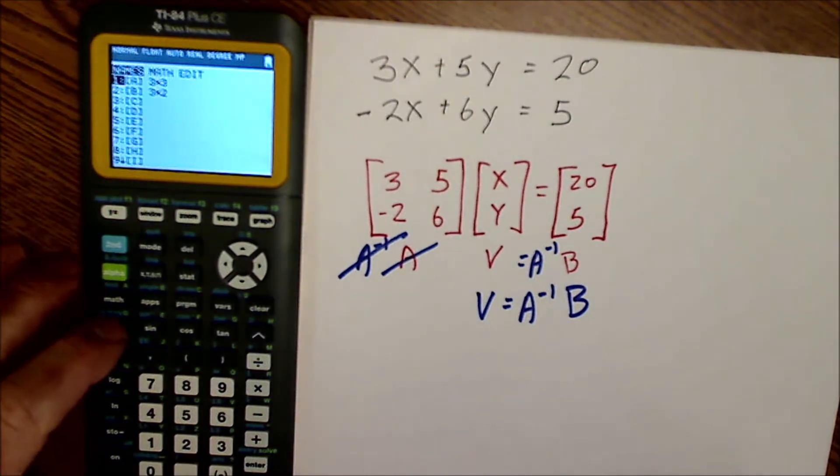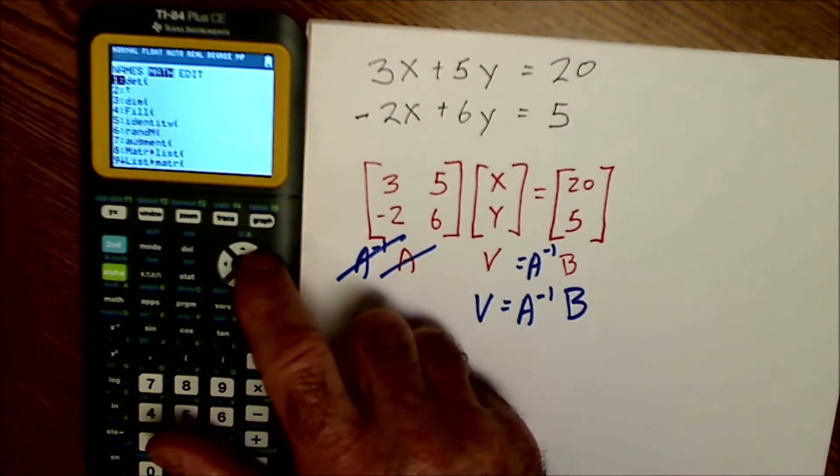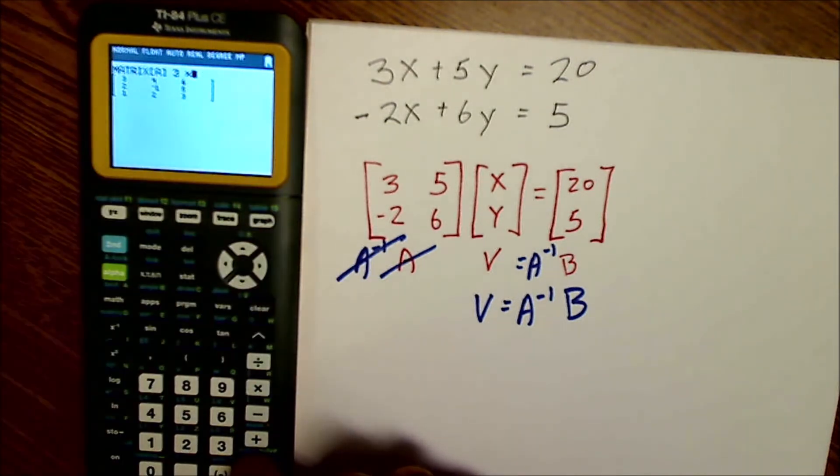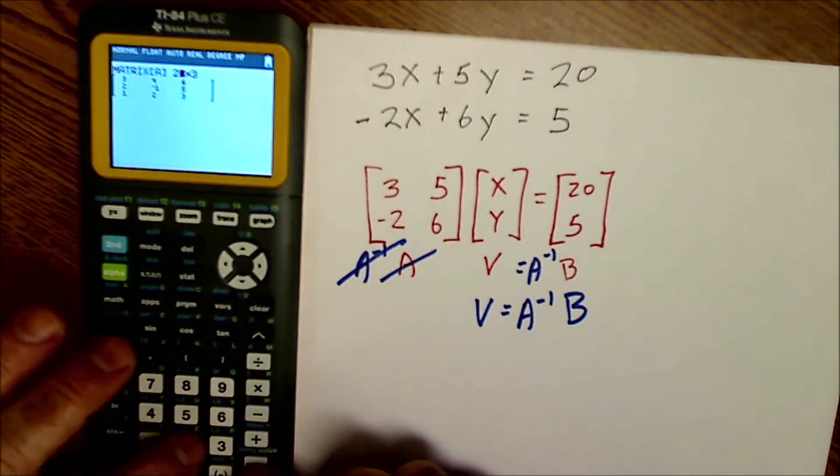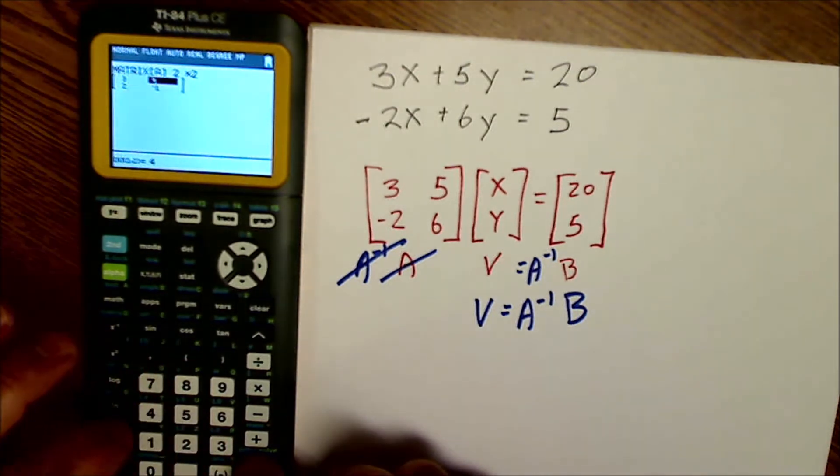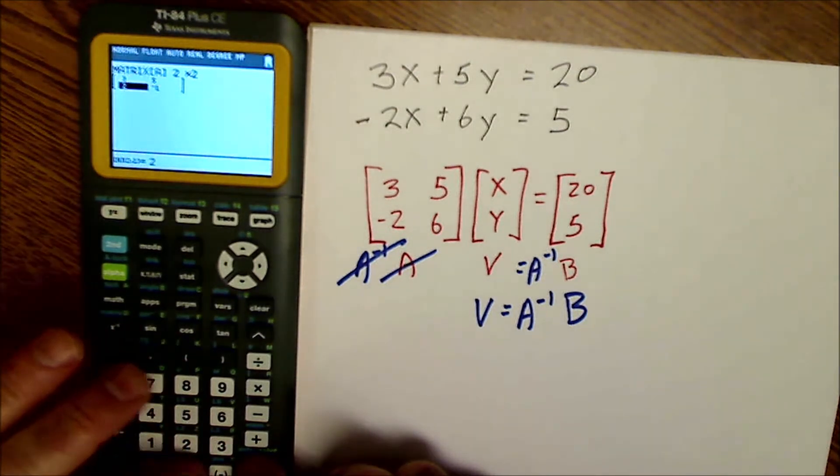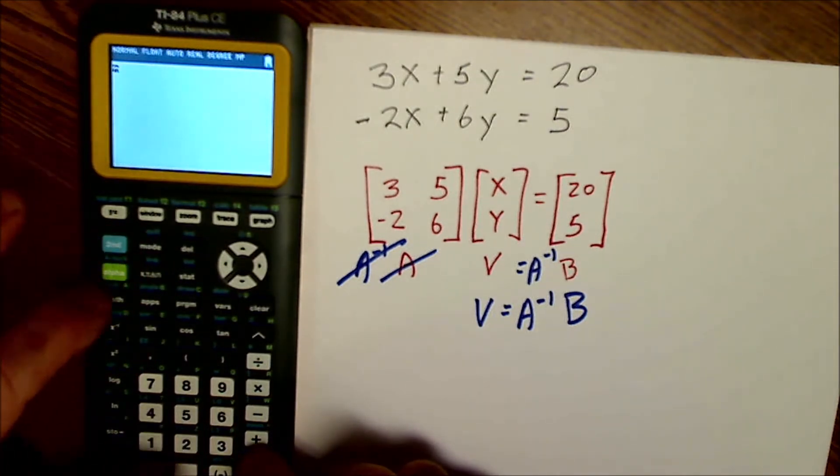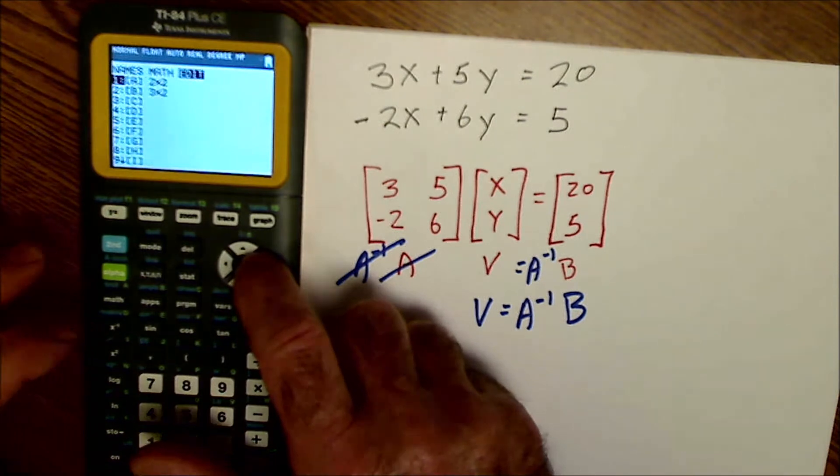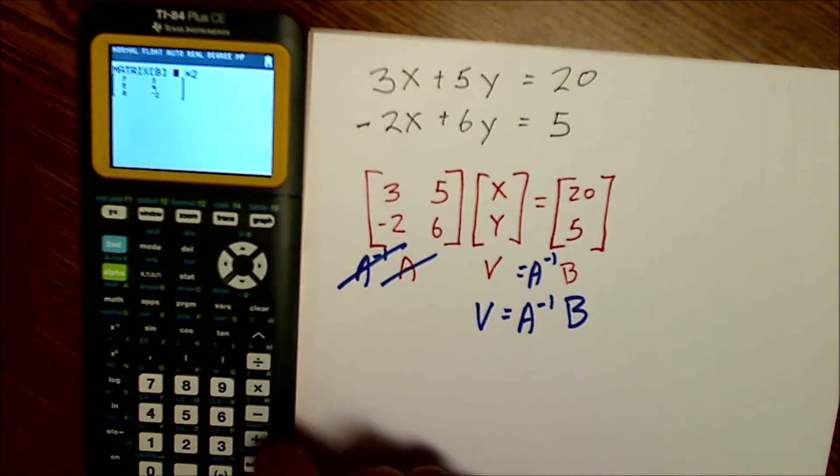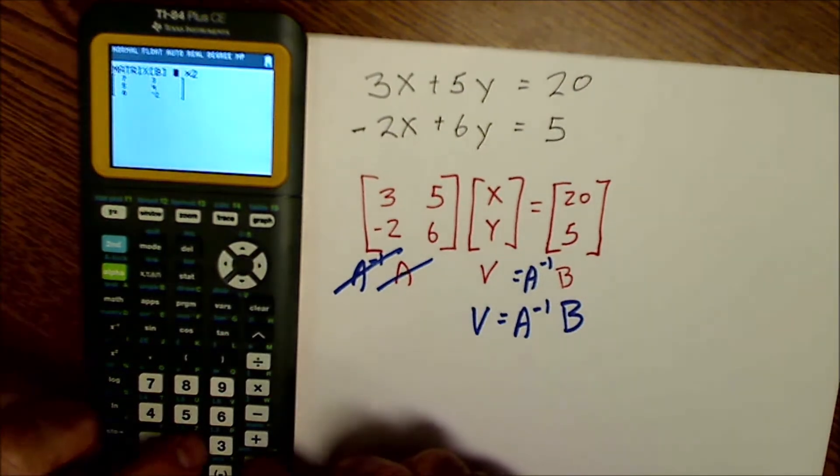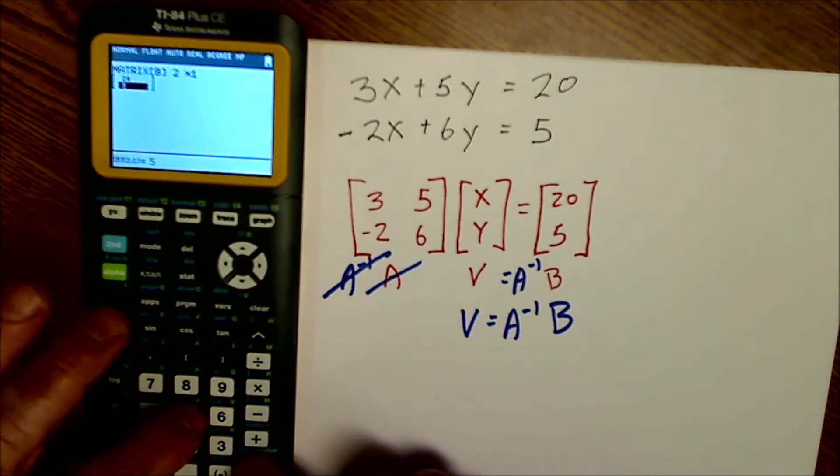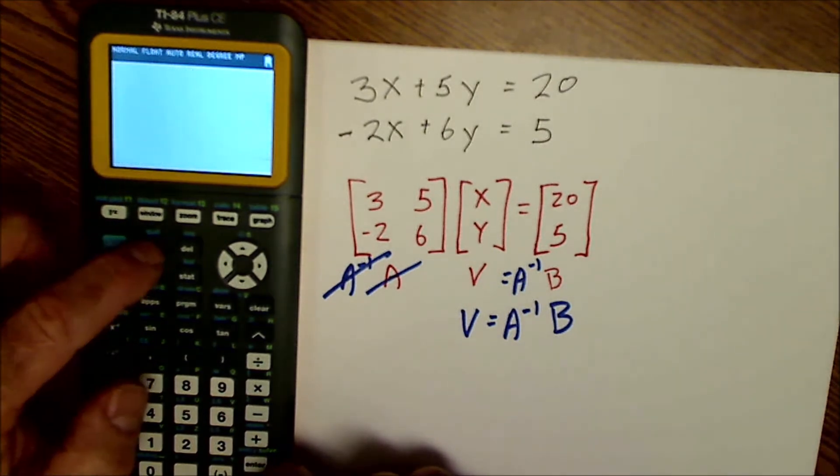So let's enter these on my calculator first. So again, I'm going to go to matrix. I'm going to edit it first. I go over to edit. I'm going to edit number one, enter. It is a two by two. Two by two. And I enter the values three, five, negative two, six. I'll quit. Go back to matrix. I'm going to edit matrix B. So I'll scroll down to two and hit enter. It's a two by one. And I'm going to enter those values 20 and five. So I'm going to quit again.